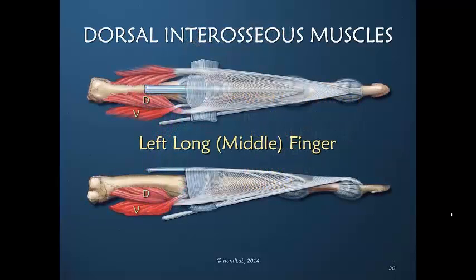Looking at the left long or middle finger, we are looking at a dorsal belly and a volar belly of the dorsal interosseous muscles. The previous drawings we've looked at were of the left ring finger, which has different anatomy. The long or middle finger has dorsal interosseous muscles on both sides and does not commonly have a volar interosseous muscle.